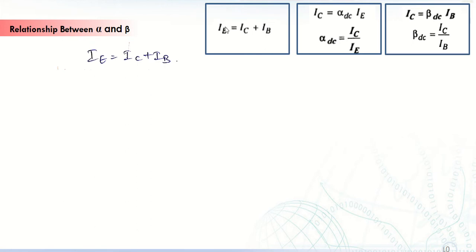As we know, the emitter current is equal to collector current plus base current. The relationship between IC and IE with respect to alpha: alpha DC is equal to IC divided by IE. Similarly, the relationship between the collector current and the base current — beta is equal to IC divided by IB.